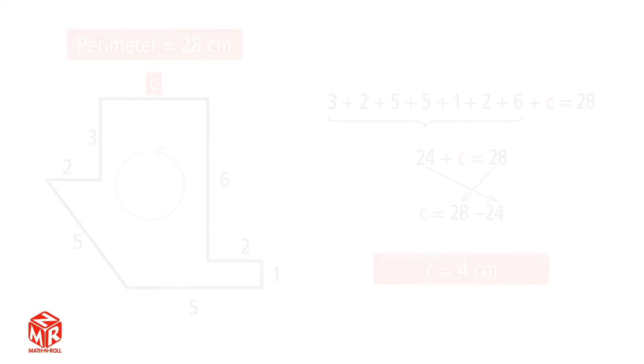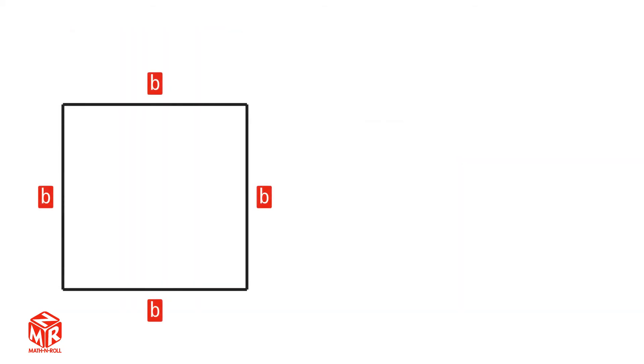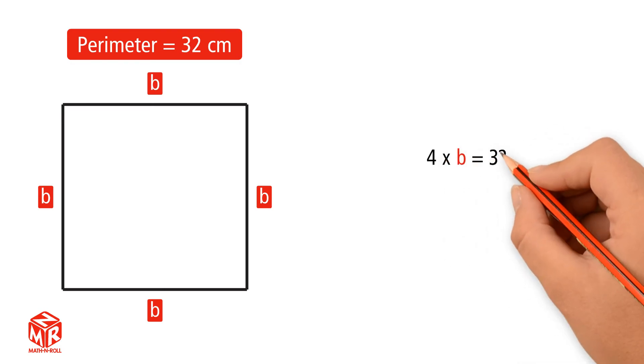Let's do another example. How do we find the length of each side of this square if the perimeter is 32 centimeters? A square has 4 sides of equal length. Instead of adding all 4 sides, we can multiply one side by 4 to find the perimeter. 4 times B equals 32.